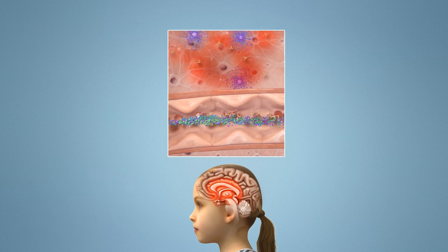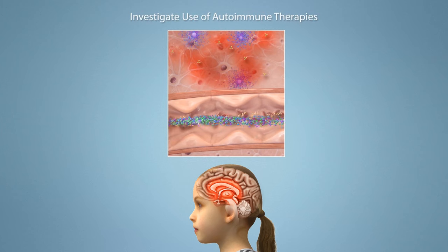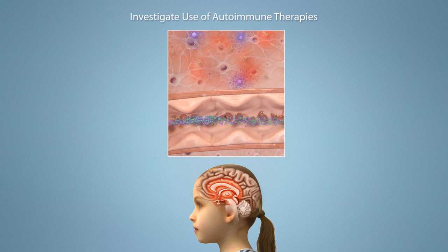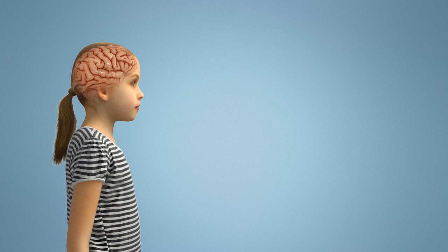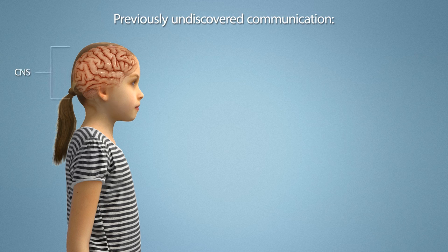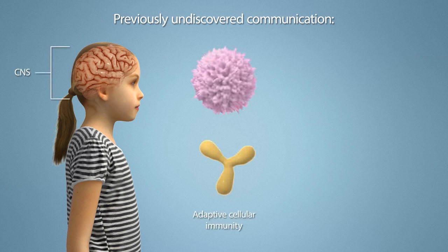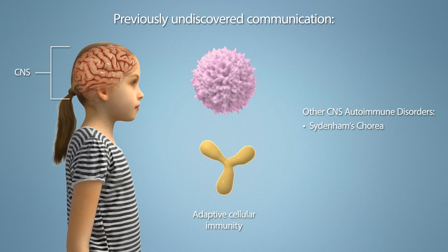Existing therapies that target IL-17A have already been developed and are being used to treat certain autoimmune diseases, and may prove beneficial in children suffering from PANDAS and PANS. The findings from the mouse studies indicate that there is previously undiscovered communication between the CNS and adaptive cellular immunity to infections. This may help lead to understanding how many other CNS autoimmune disorders develop, such as Sydenham's chorea, multiple sclerosis, NMDAR encephalitis, and long COVID.